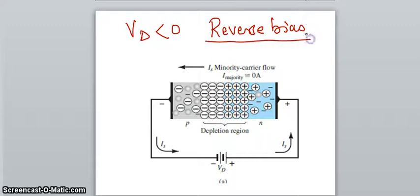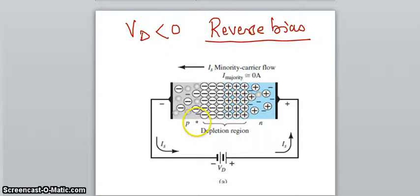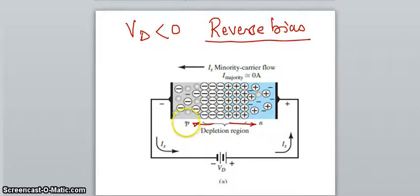During reverse bias, the electrons in the n-region get strong attraction towards the positive terminal of the battery. Similarly, the holes of the p-region are filled by electrons supplied by the battery. So there are more immobile negative ions on the p-side and more immobile positive ions on the n-side. This increases the depletion region on both sides, and there is no communication — electrons cannot jump across and holes cannot be filled. The circuit does not get completed because the depletion region becomes larger and larger, providing strong resistance, and there is almost nil current flow due to majority charge carriers.